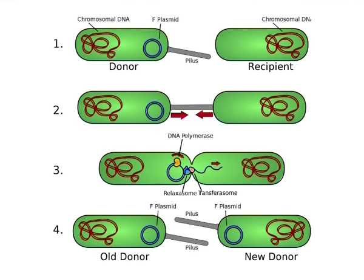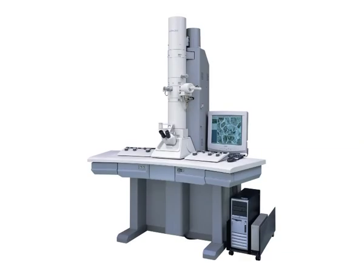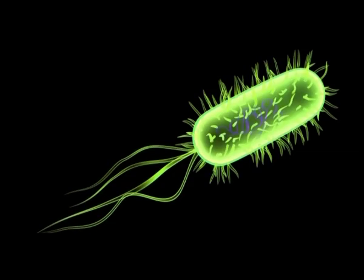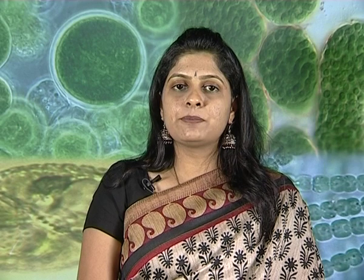Functions of fimbriae: first is adhesion — fimbriae are organs of adhesion and this property enhances the virulence of bacteria. Fimbriae also help in transfer of genetic material. Sex pili are present in male bacteria, are longer and 1 to 4 in number. They help male cells attach to female cells in forming conjugation tubes through which genetic material is transferred from the donor (male) to the recipient (female) cell. Fimbriae can be detected using electron microscopy or haemagglutination. Many fimbriated bacteria such as E. coli and Klebsiella strongly agglutinate red blood cells, making haemagglutination a simple method for detecting fimbriae.